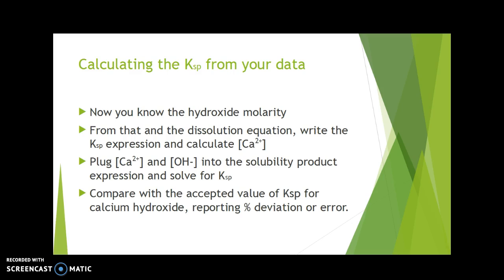From that, you should be able to write the expression for the solubility product constant. Now you also know the relationship from the stoichiometry, the relationship between the calcium ion concentration and the hydroxide ion concentration. It's a simple ratio. Once you have calculated the calcium ion concentration from the hydroxide concentration that you got up here.